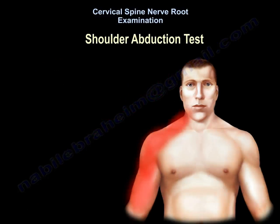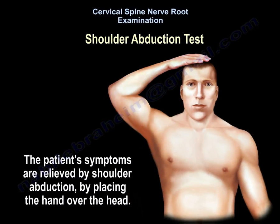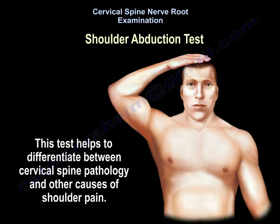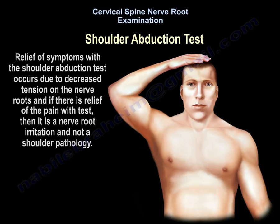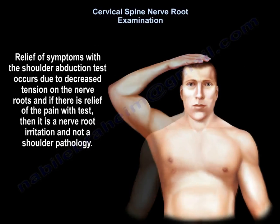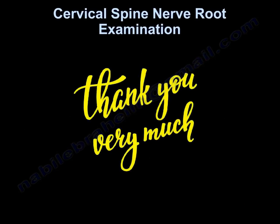The shoulder abduction test assesses whether the patient's symptoms are relieved by placing the hand over the head. This test helps differentiate between cervical spine pathology and other causes of shoulder pain, and is an important test for cervical radicular compressive diseases. Relief of symptoms with shoulder abduction occurs due to decreased tension on the nerve roots. If pain is relieved with this test, it indicates nerve root irritation rather than a shoulder pathology. Thank you — I hope that was helpful.